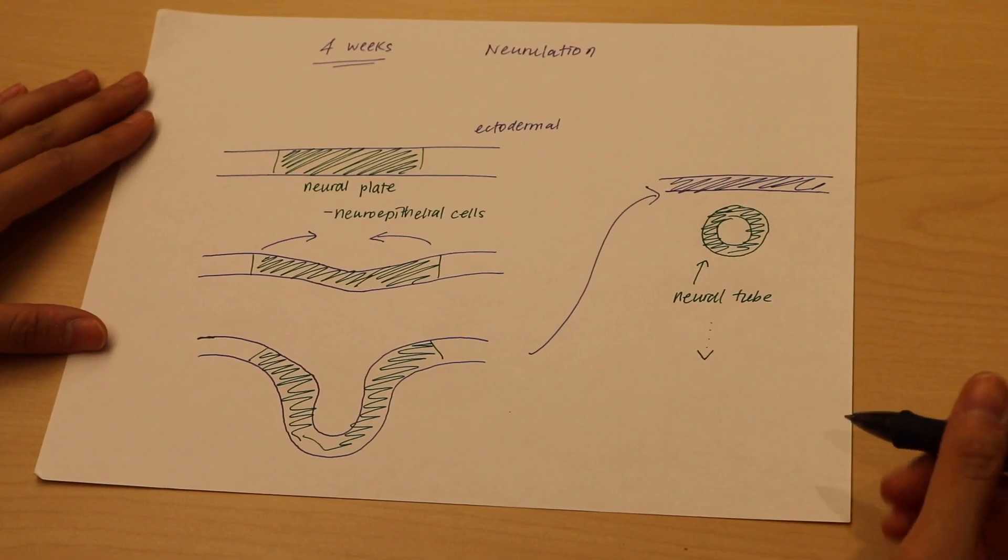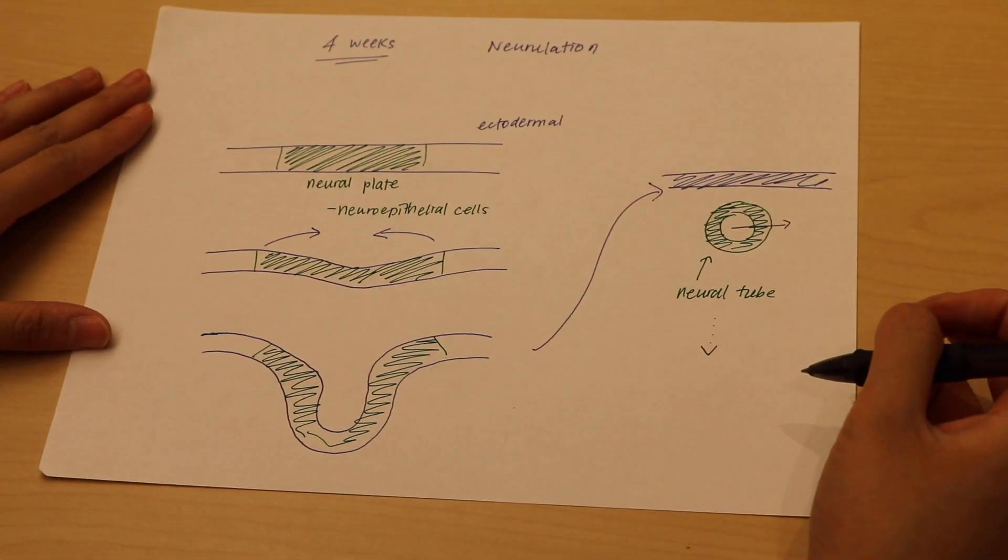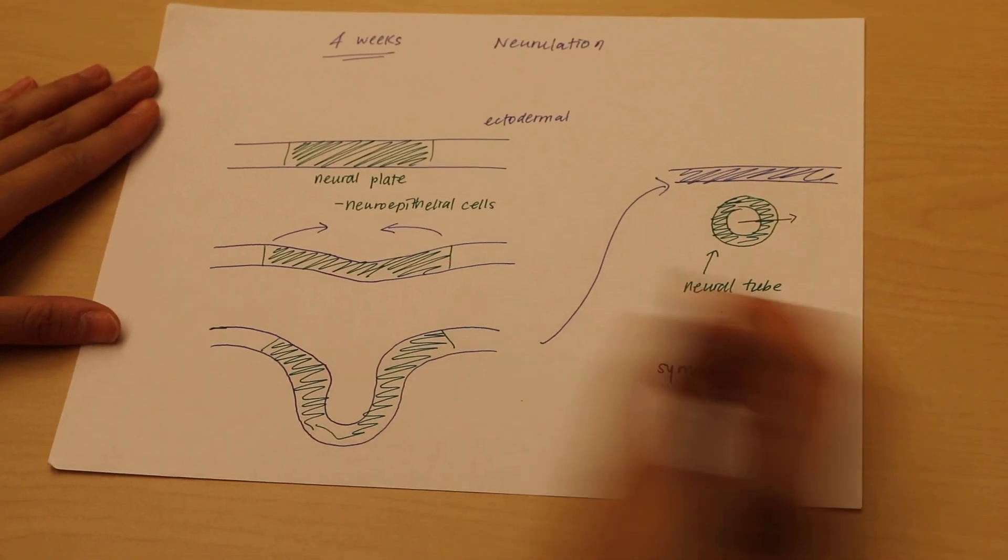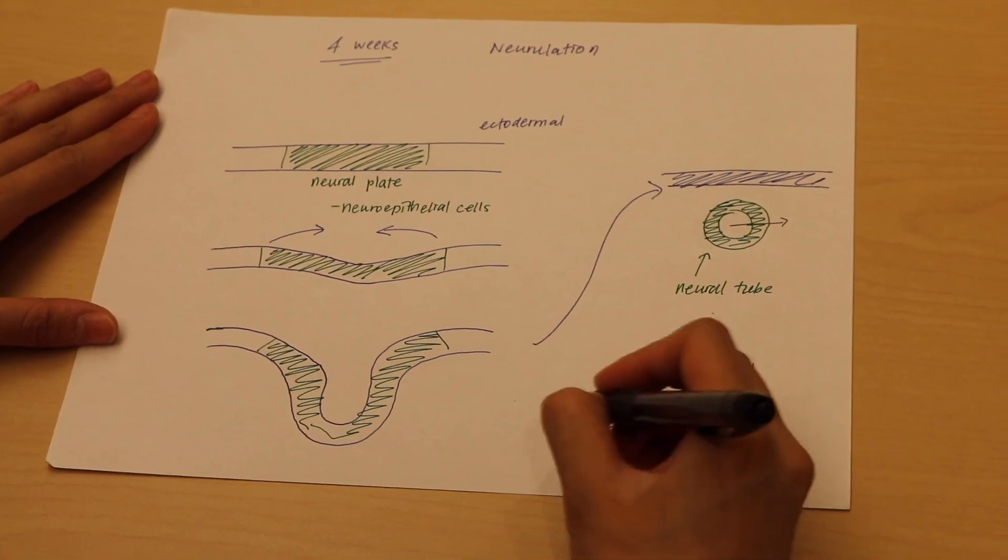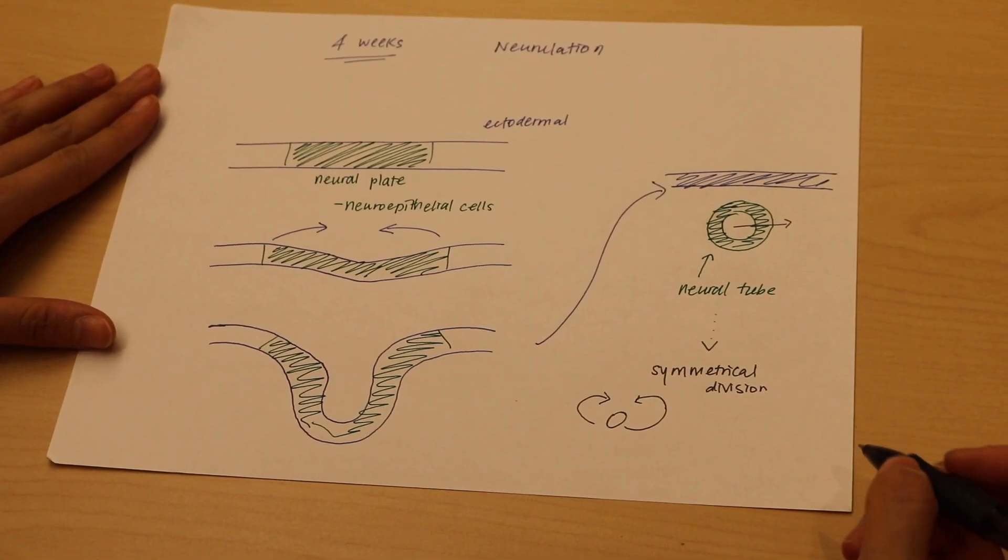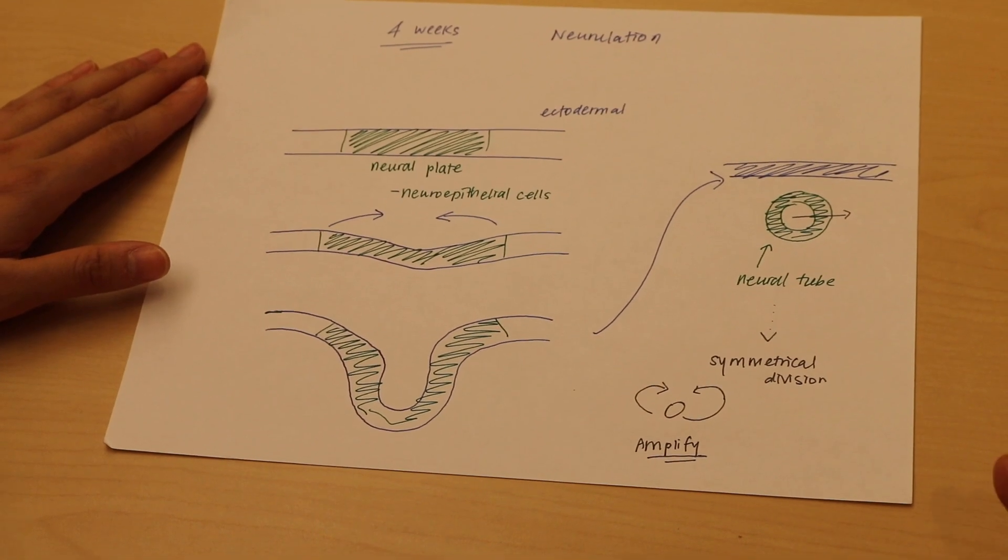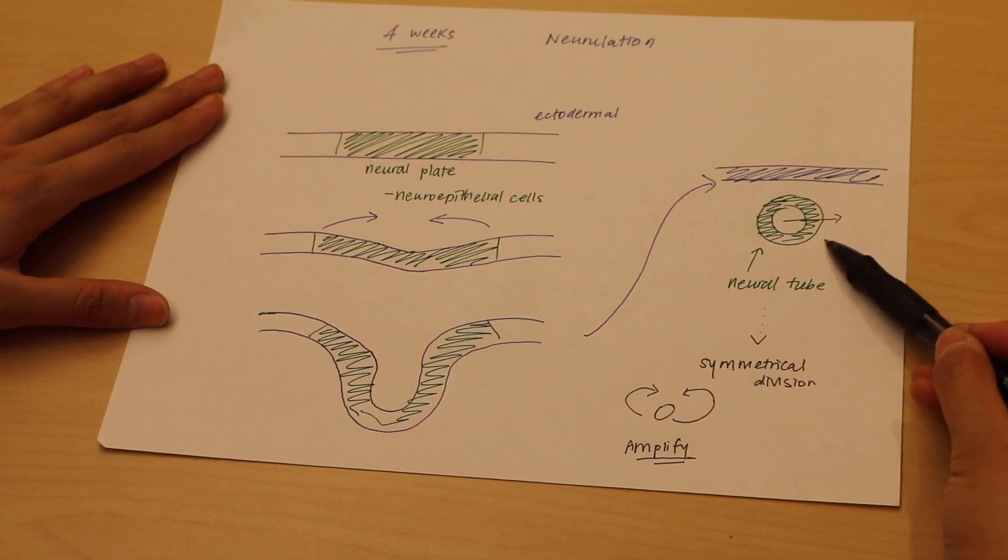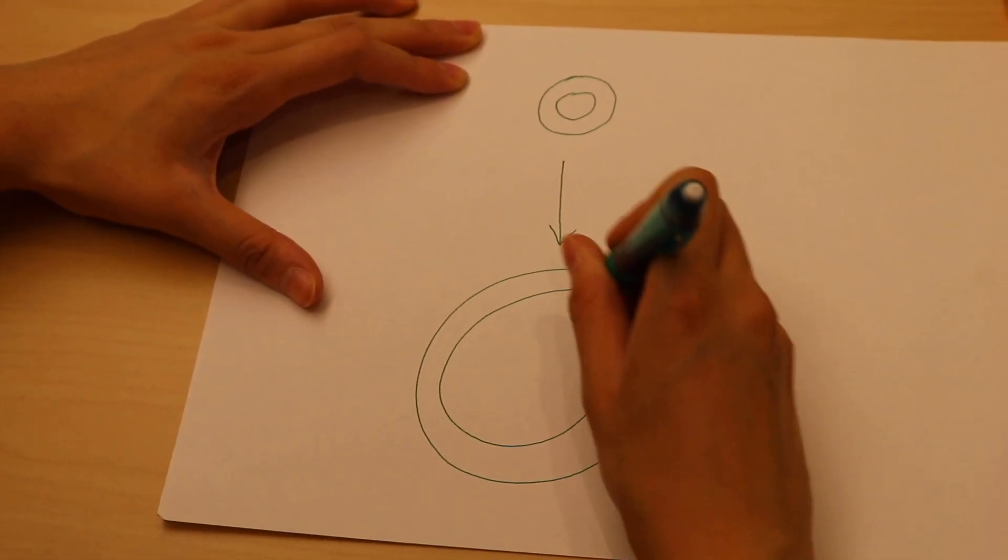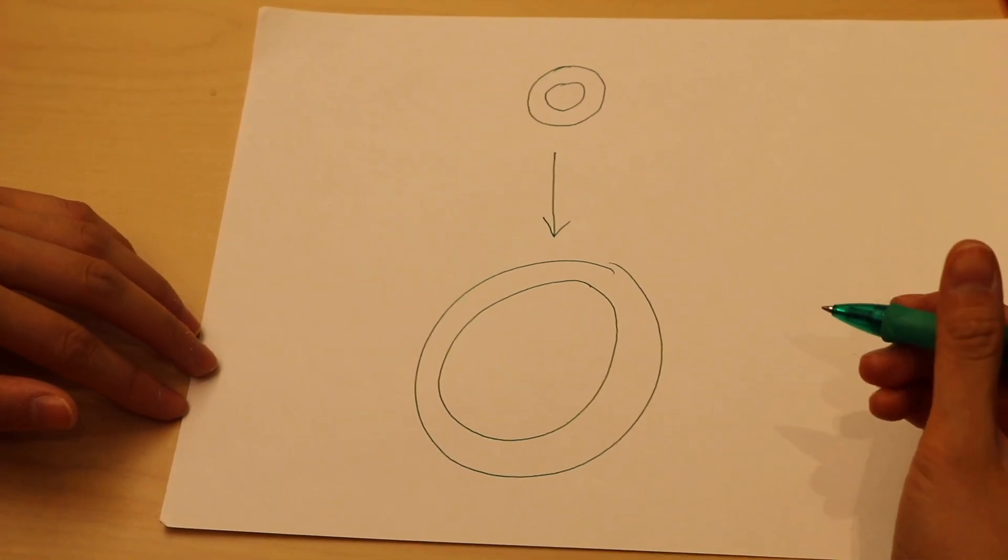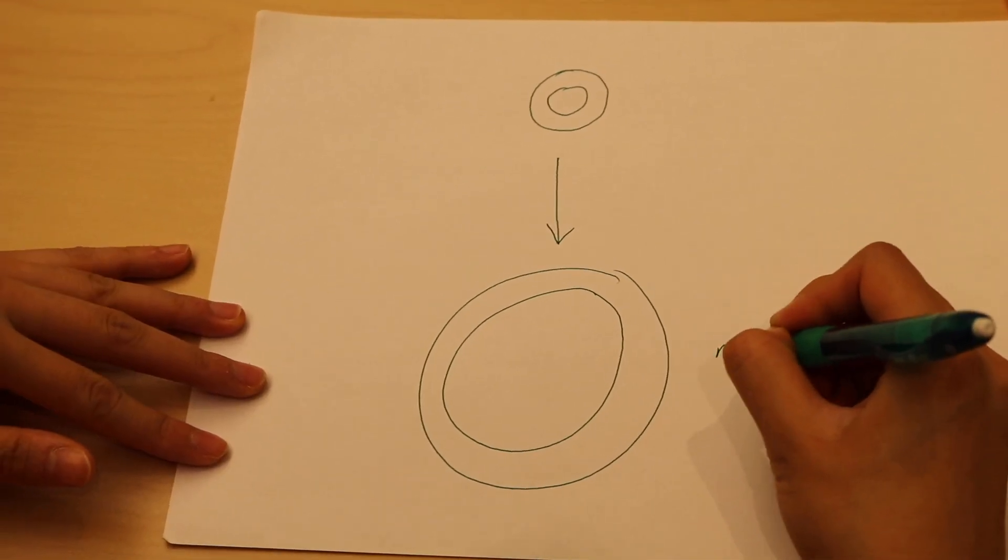Many proliferative areas surrounding this ventricle-like middle will undergo something called symmetrical division. This is when our neural stem cells, or our neuroepithelial cells, will start regenerating many forms of itself and populate. Essentially, they want to amplify the existing numbers of neural stem cells, so we go from a small neural tube structure to a much bigger one, which is then able to form our brain and have the right numbers of neural stem cells for the mass neurogenesis that is to follow.